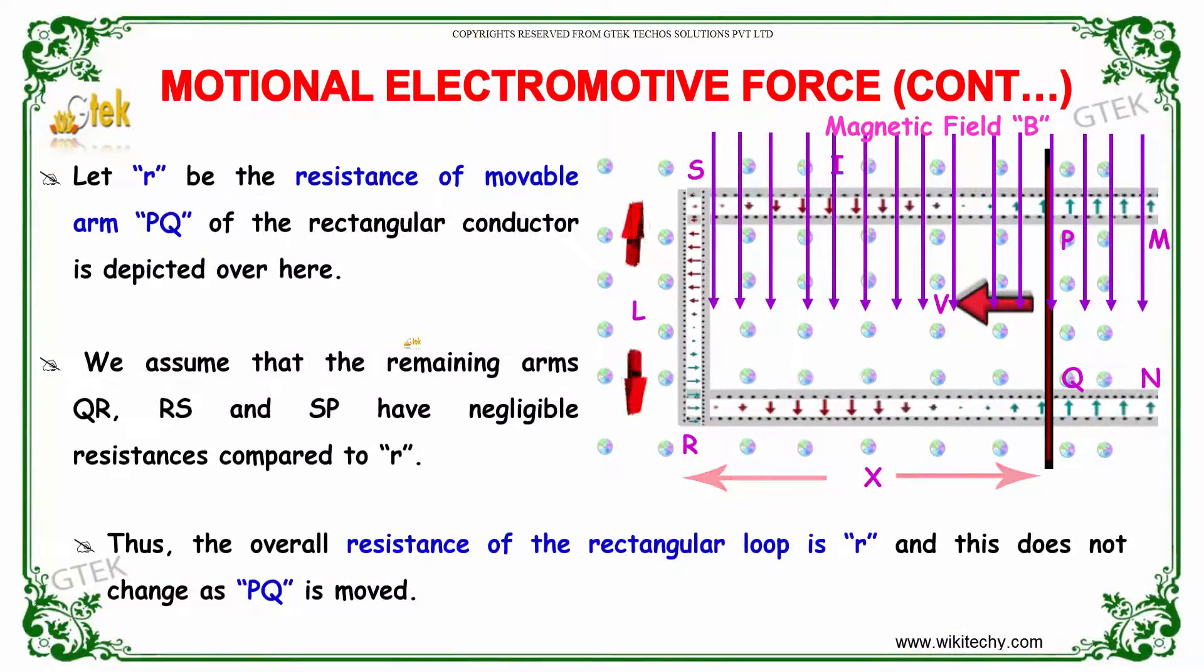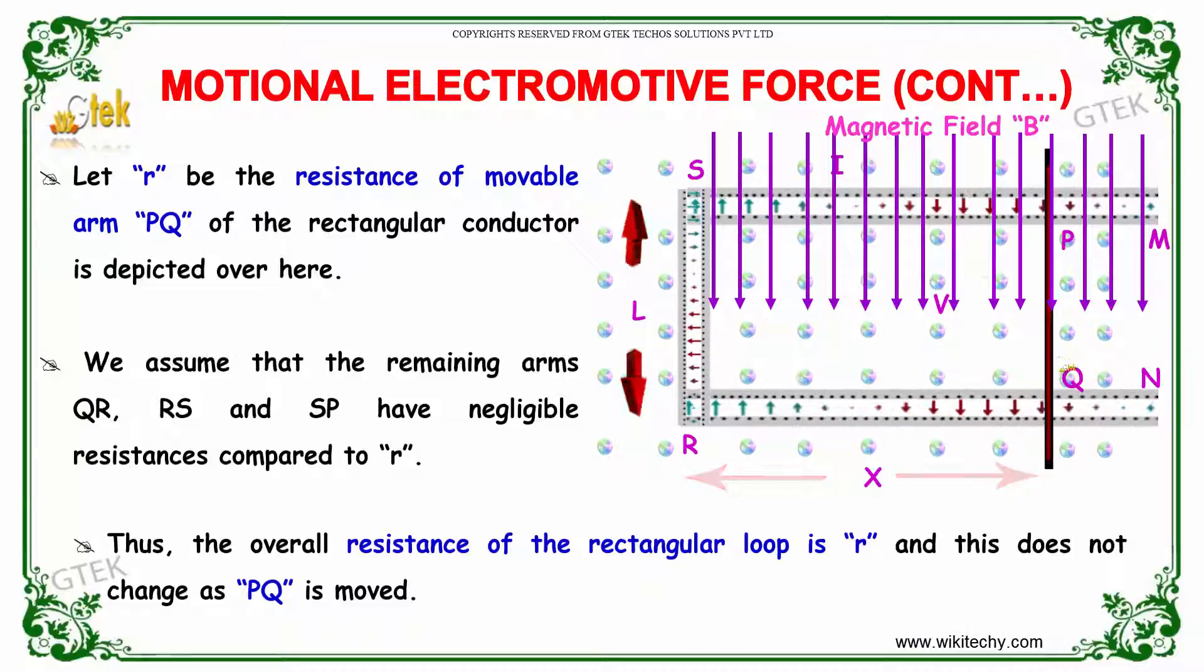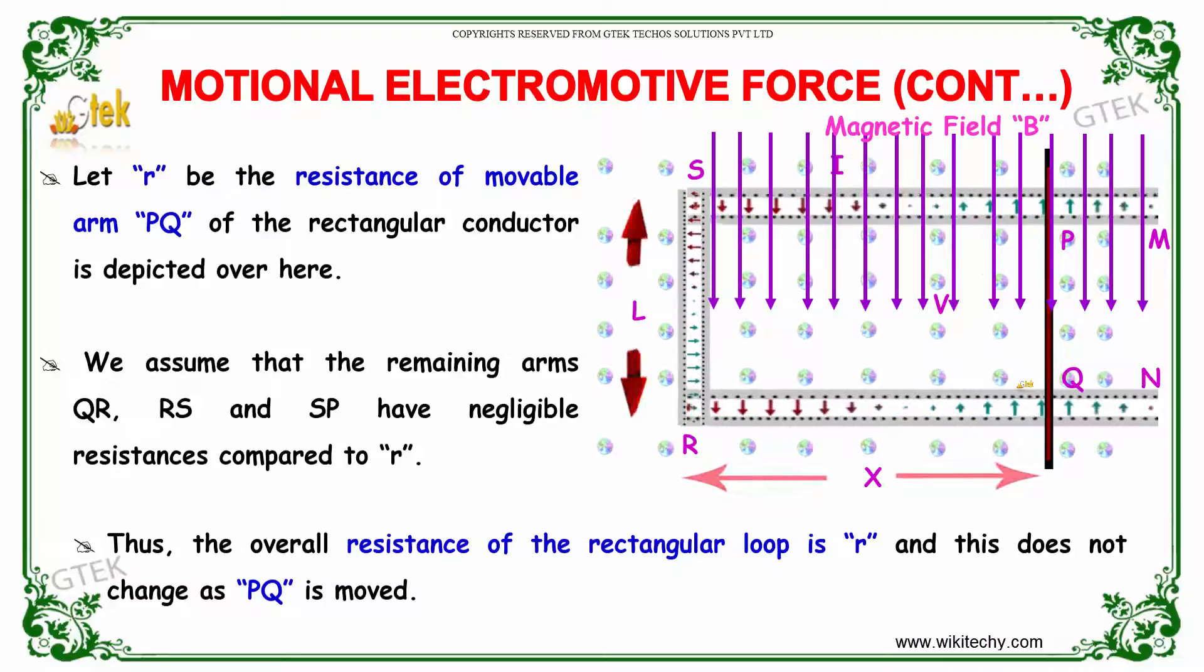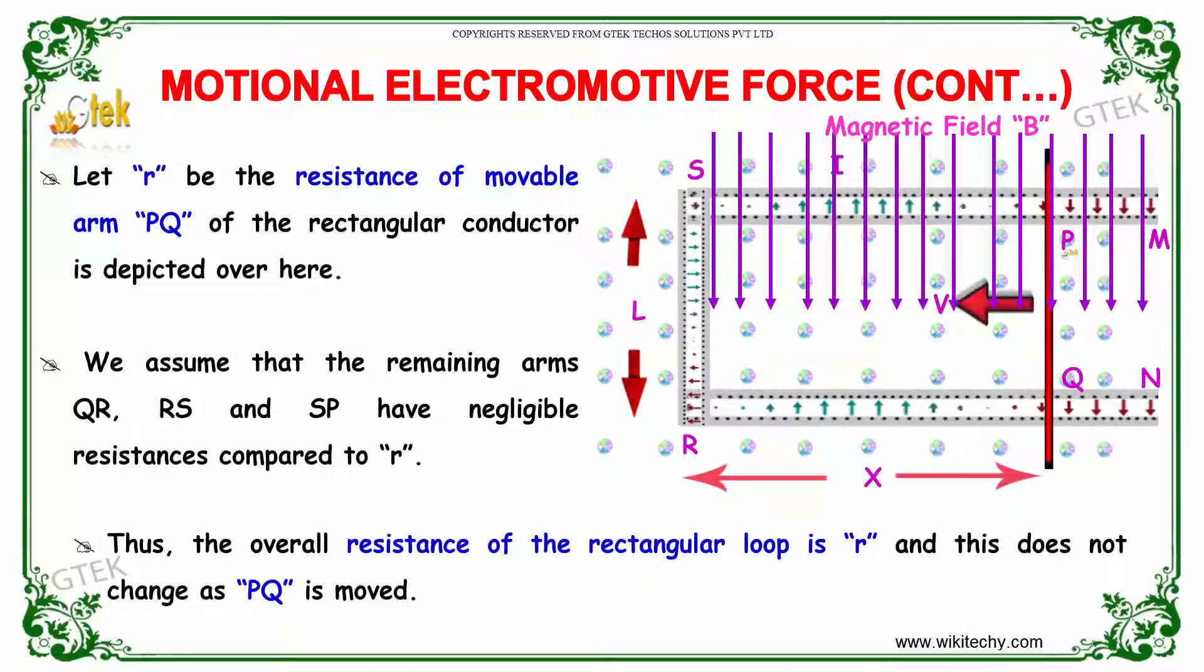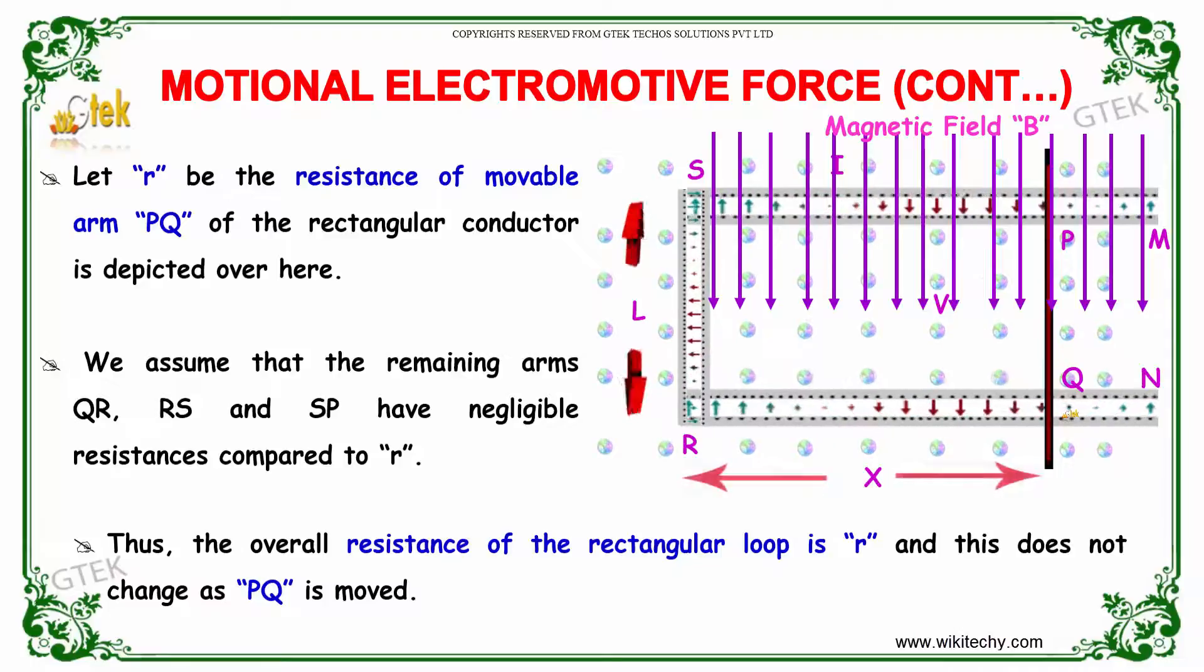Now let's consider R be the resistance of the movable arm PQ of the conductor. We assume that the remaining arms QR, RS, and SP will be having negligible resistance comparable to the resistance R. Thus, the overall resistance of the rectangular loop is R, and this does not change as PQ is moved.